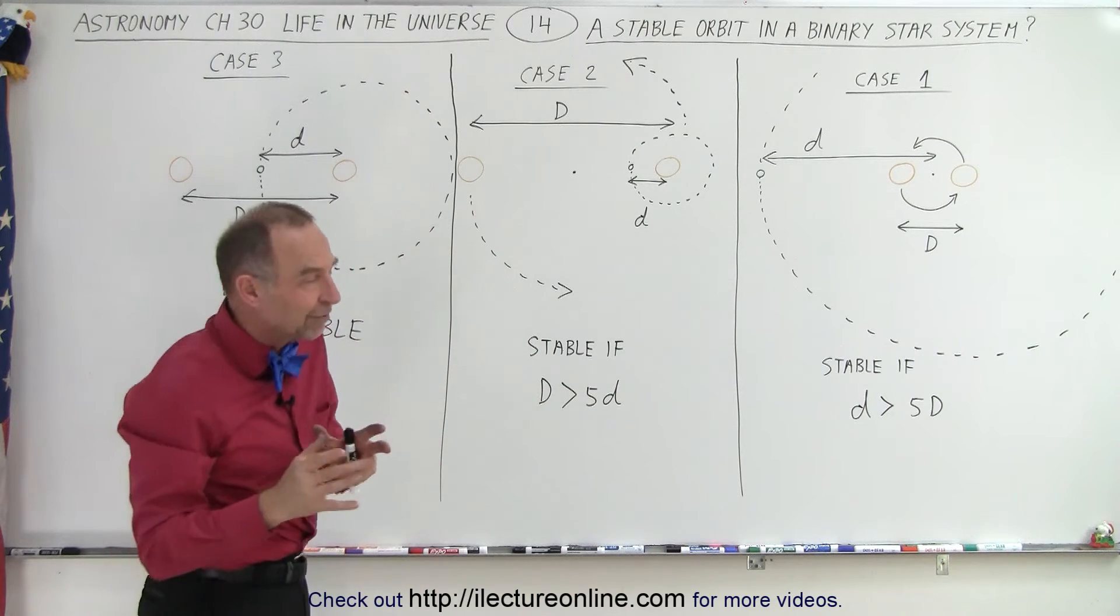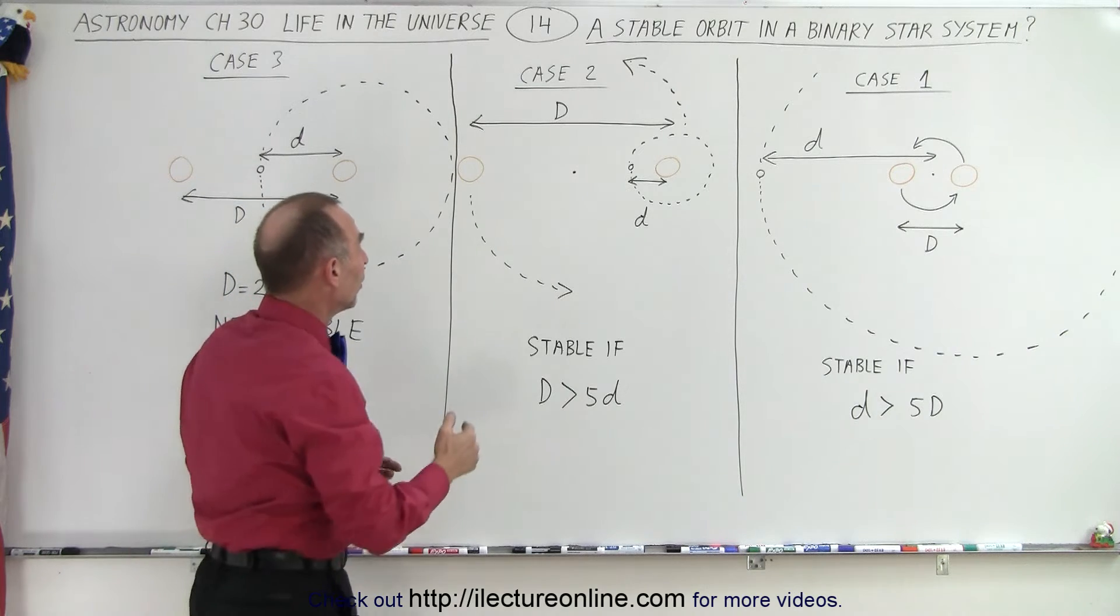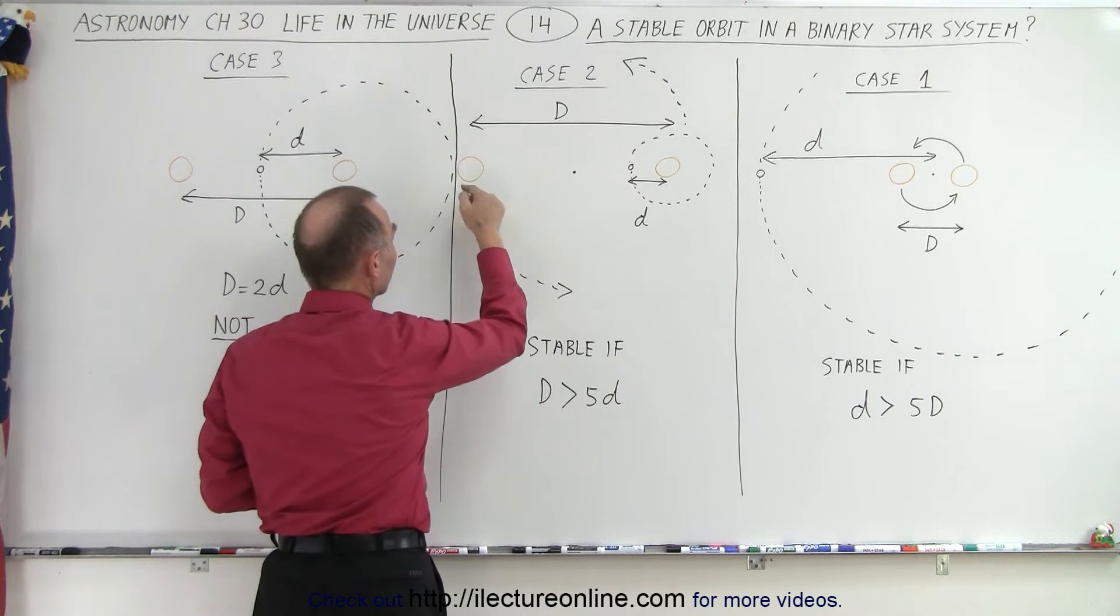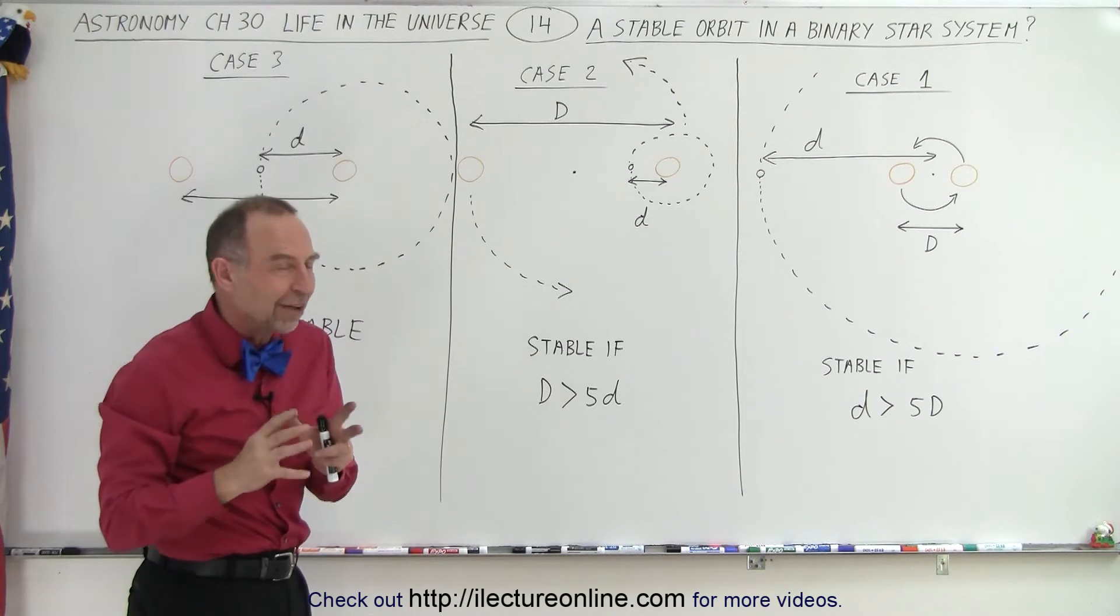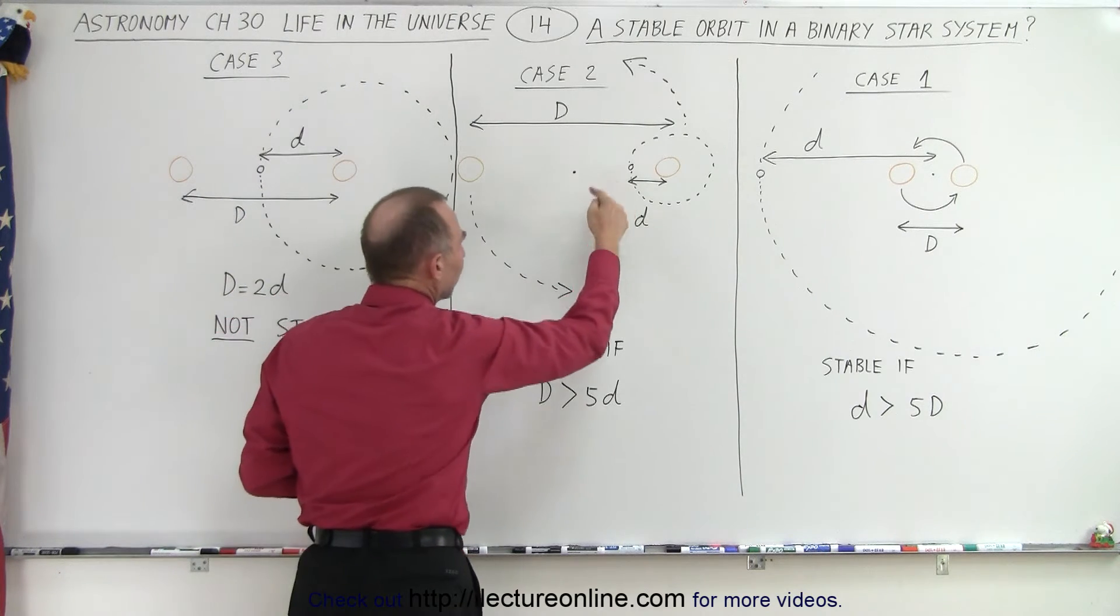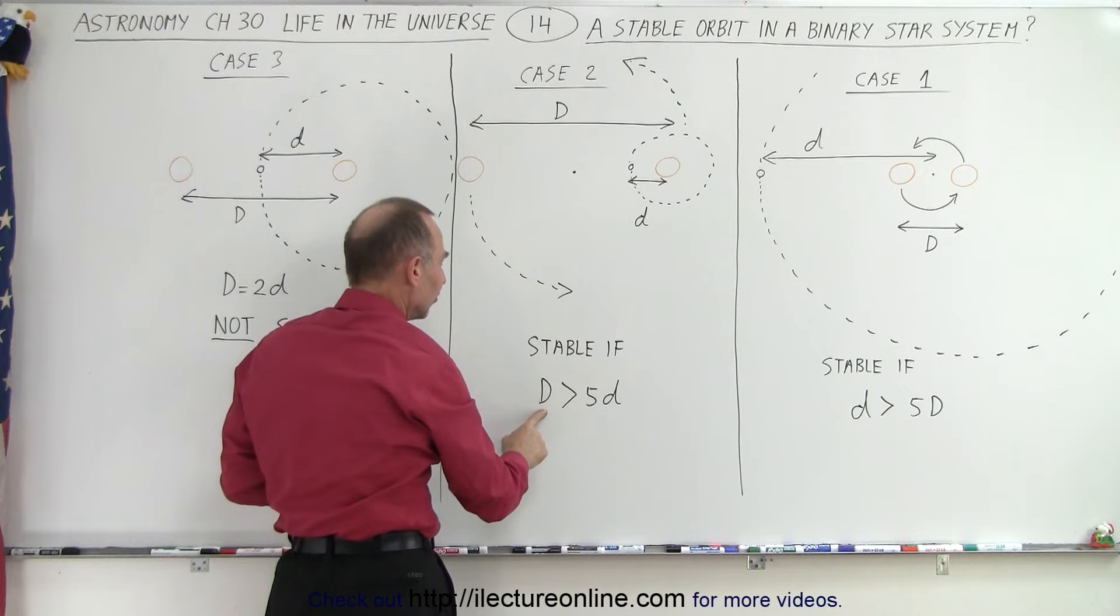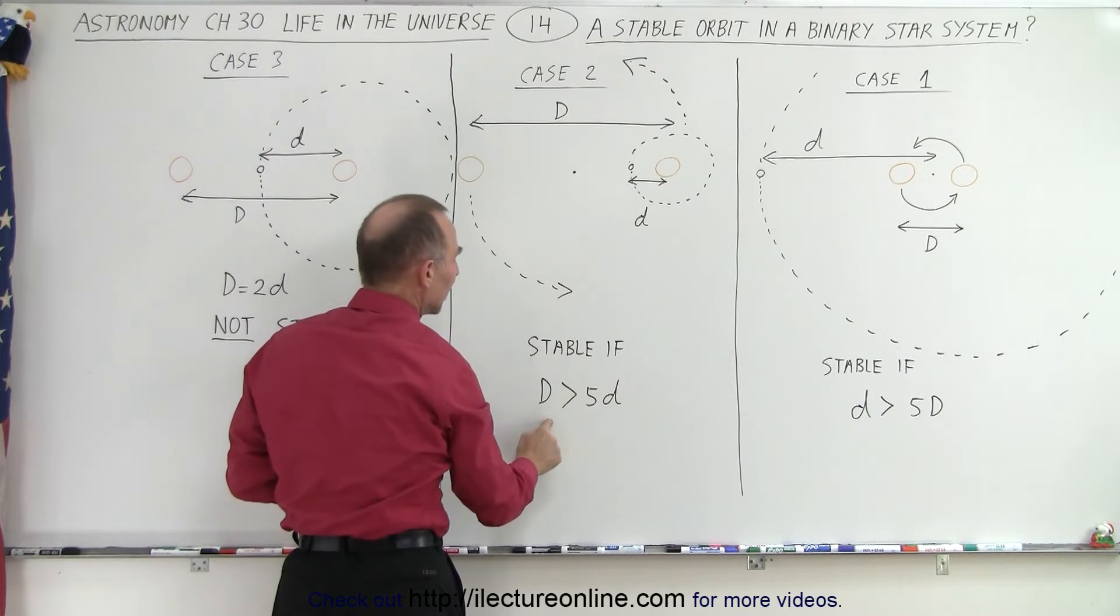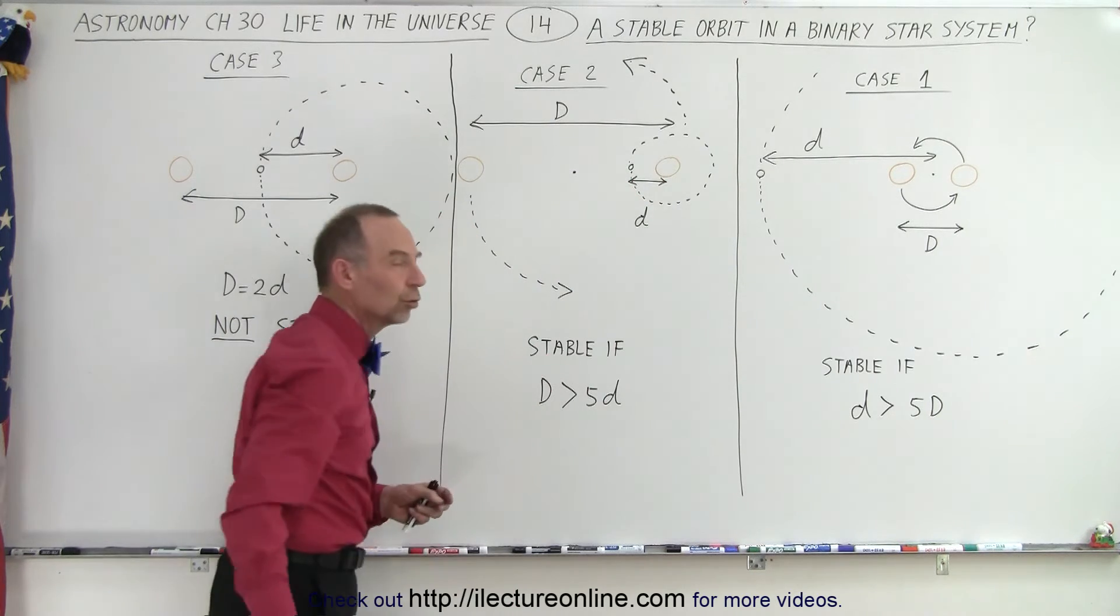relatively speaking, to the force between this planet and that star, remember that the gravitational force is proportional to one over the distance squared. So if this one is much farther away, you square that distance relative to this. The force is so small that it would not have much of an effect on this orbit and you would have a stable orbit. Again, the idea is that the distance between the two stars would be greater than five times the distance between the planet and one of the two stars.